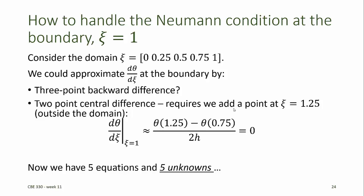We now have five equations and five unknowns. Our unknowns are the values of theta at 0.25, 0.5, 0.75, 1, and 1.25, which is the imaginary point outside of our domain.